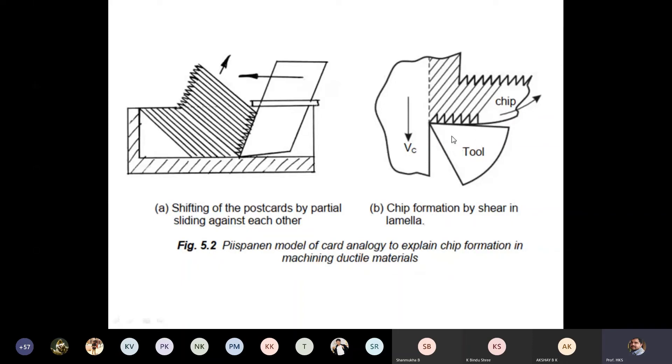During machining, the material will be removed in the form of chips layer by layer. If you rotate it 90 degrees or keep it vertically, you can see how postcards will be removed in this fashion. Similarly here, it will be removed in the similar manner.